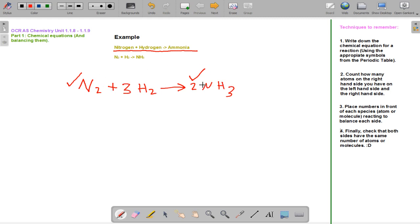3 times 2 is 6, so 2 times 3 is also 6, so we balanced our equation fully.